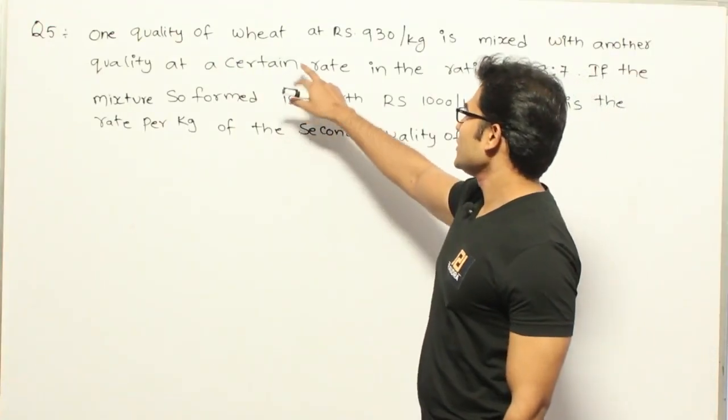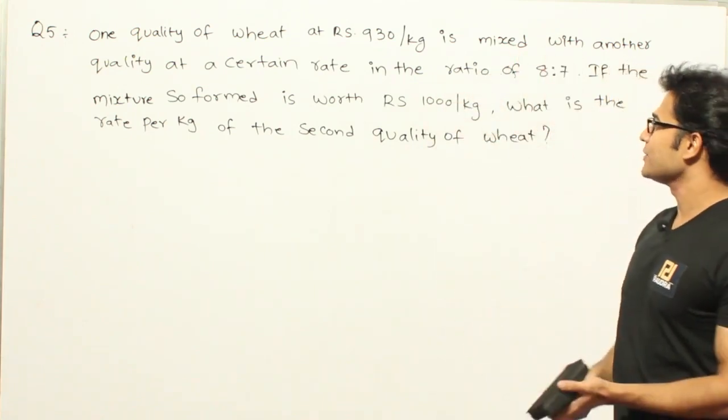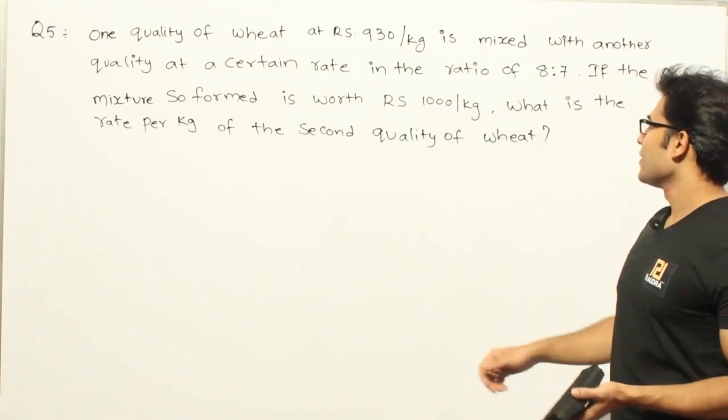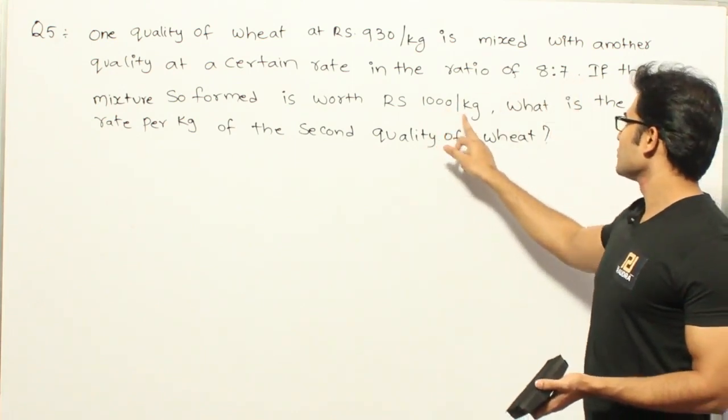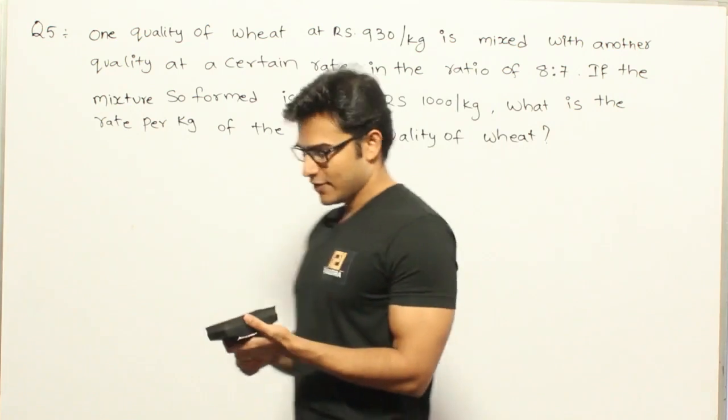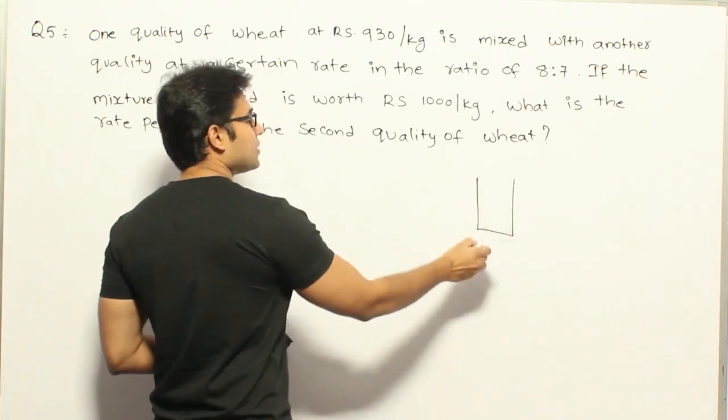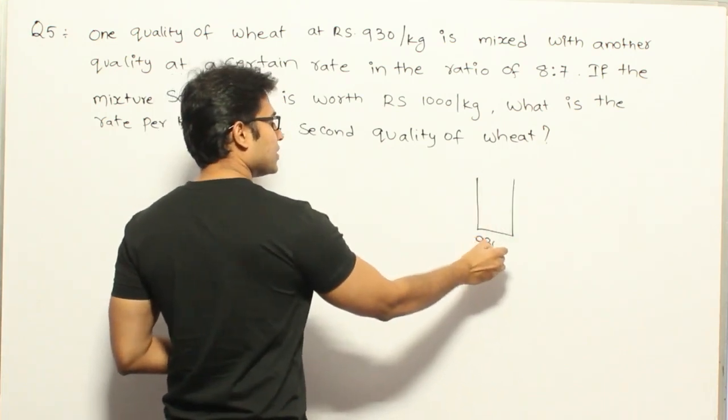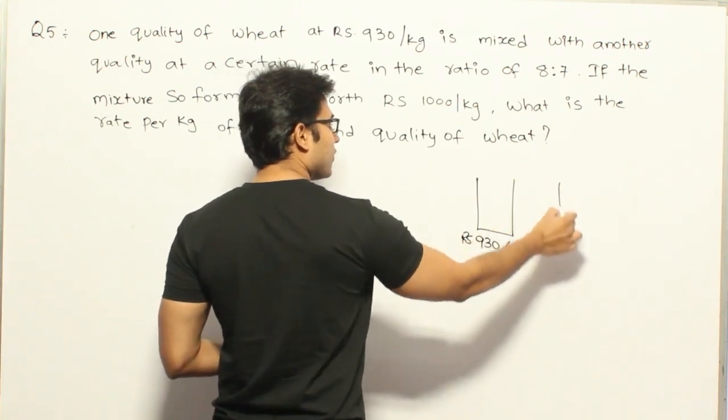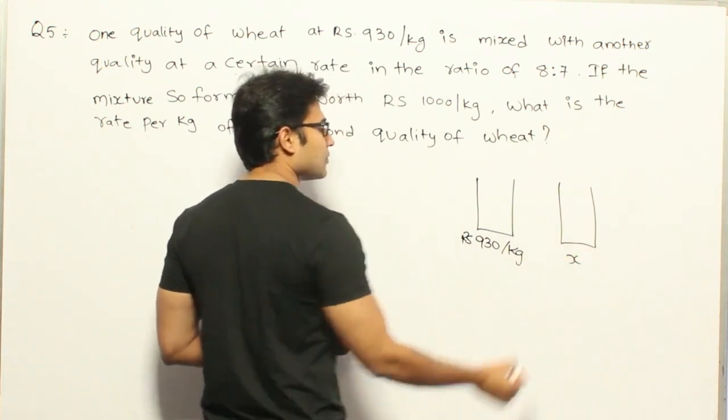Let's see this. One quality of wheat at Rs. 930 per kg is mixed with another quality at a certain rate in the ratio 8 is to 7. If the mixture so formed is worth Rs. 1000 per kg, then what is the rate per kg of the second quality of wheat?